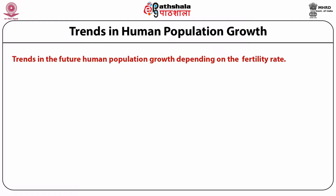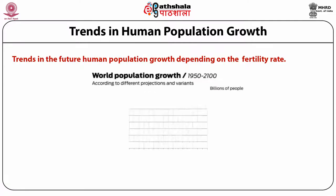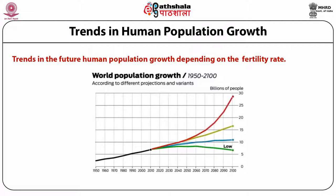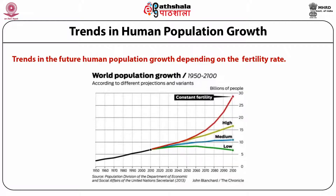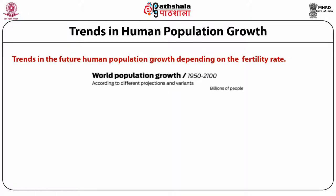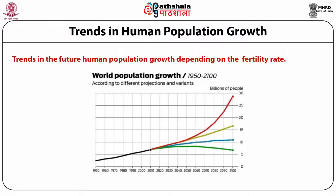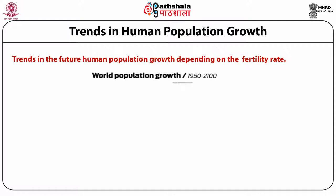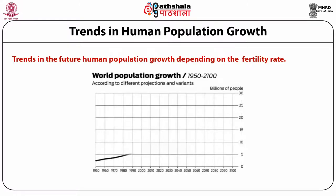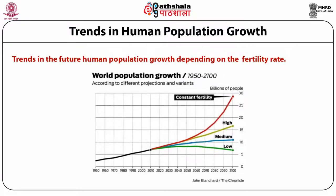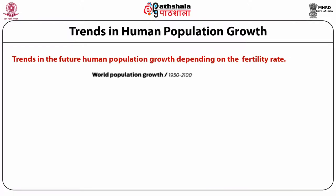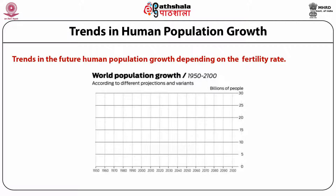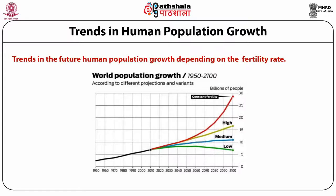Expected trends in human population growth with different fertility values from 1950 to 2100 show that with a constant fertility rate, the population is increasing exponentially. With a medium population growth rate, the rate of growth is slightly less, and with a low population growth rate, the population is towards decline. The constant fertility rate scenario is based on past observations, but because of population control measures, exponential growth will likely not continue. These are predicted values to indicate what would happen without population control measures.